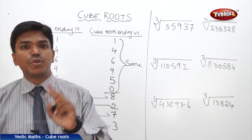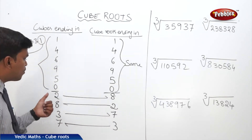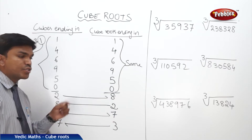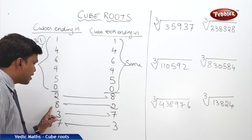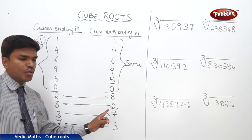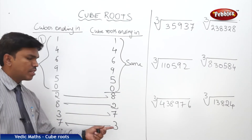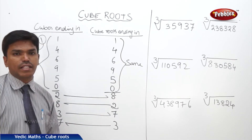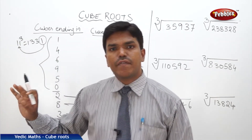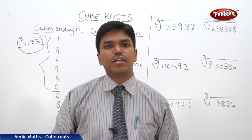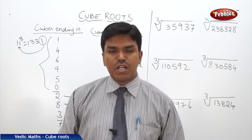But for two digits it differs. If a cube number is ending in 2, its cube root should end in 8, and if it ends in 8, the cube root ends in 2. Similarly, 3 and 7 swap: cube ending in 3 gives cube root ending in 7, and vice versa. If you are very good at this table and the cubes until 10, it's very easy to calculate cube roots.